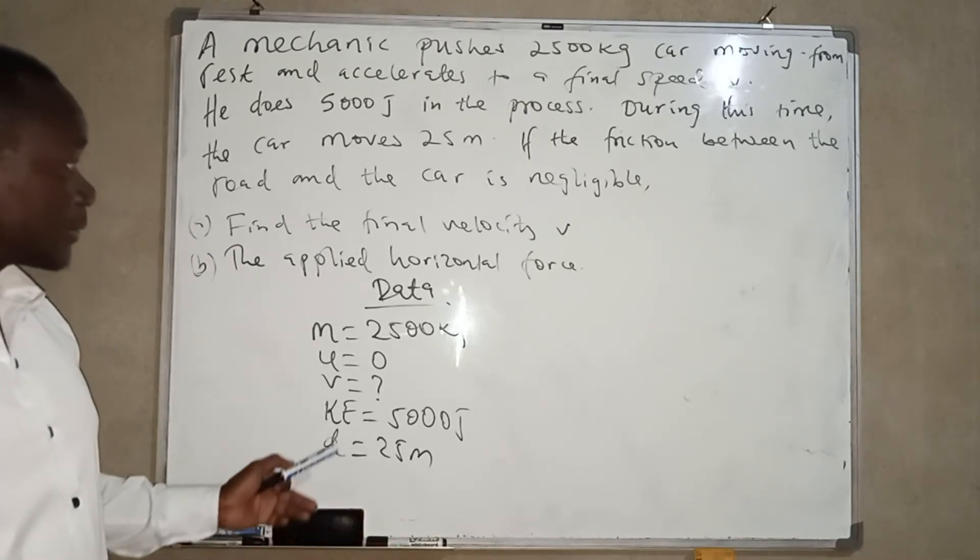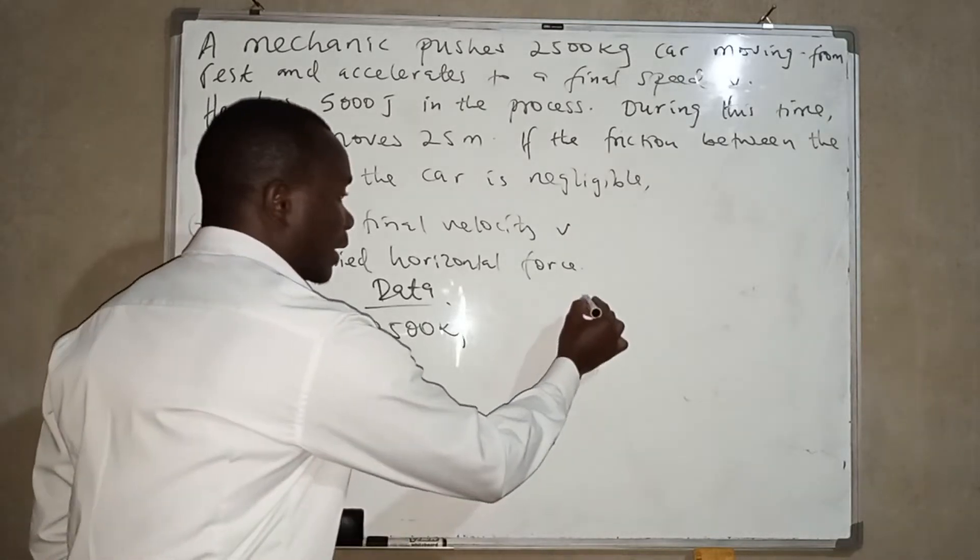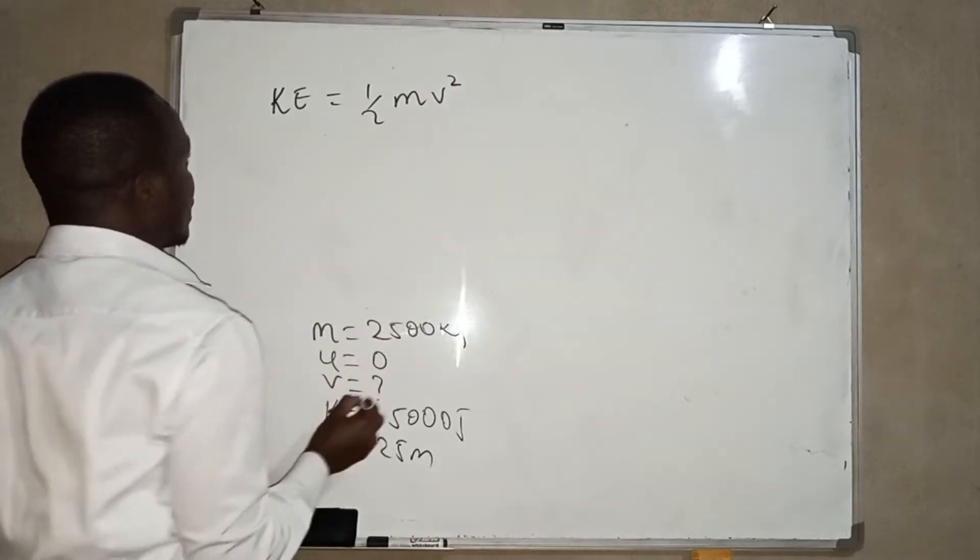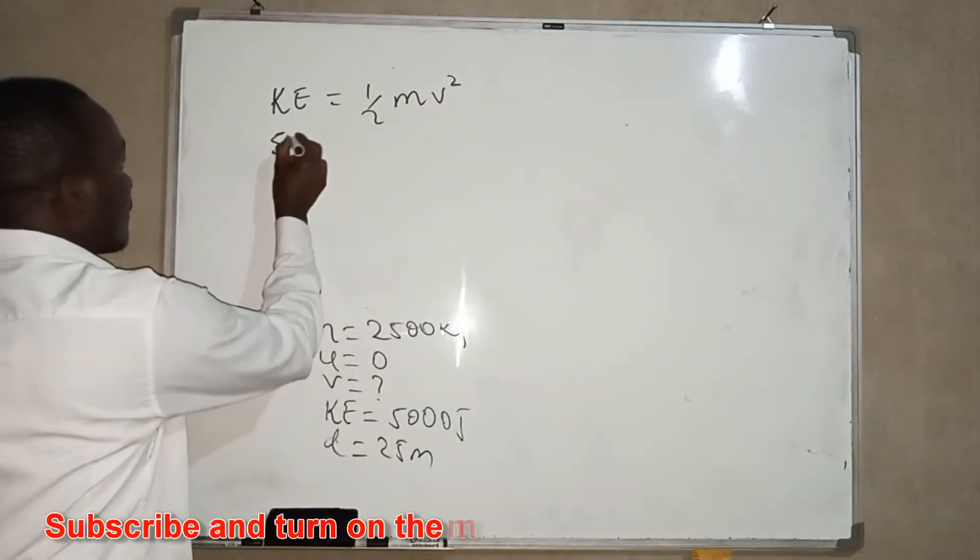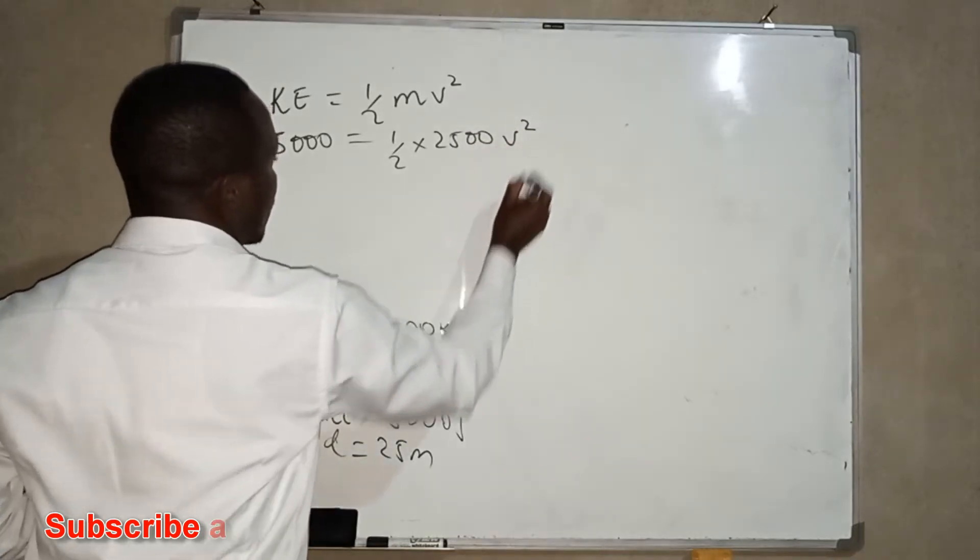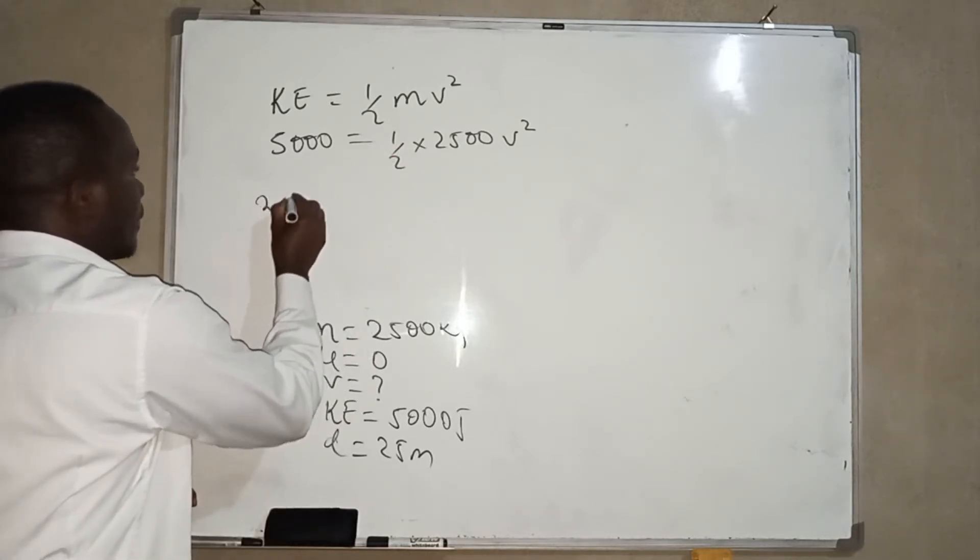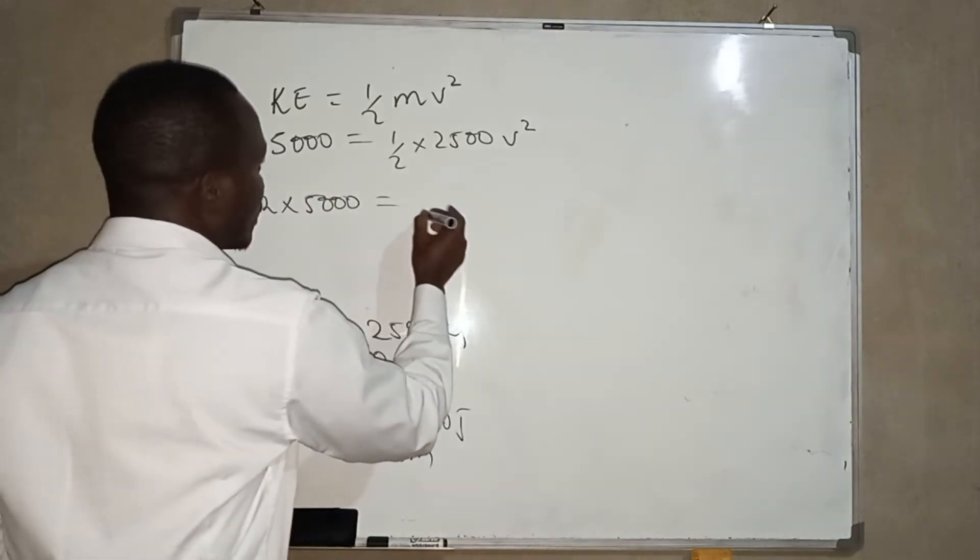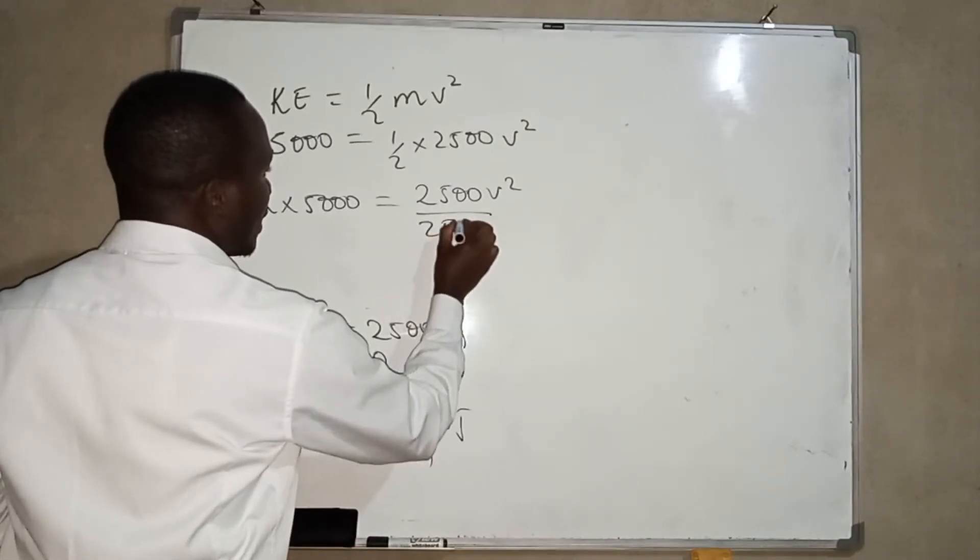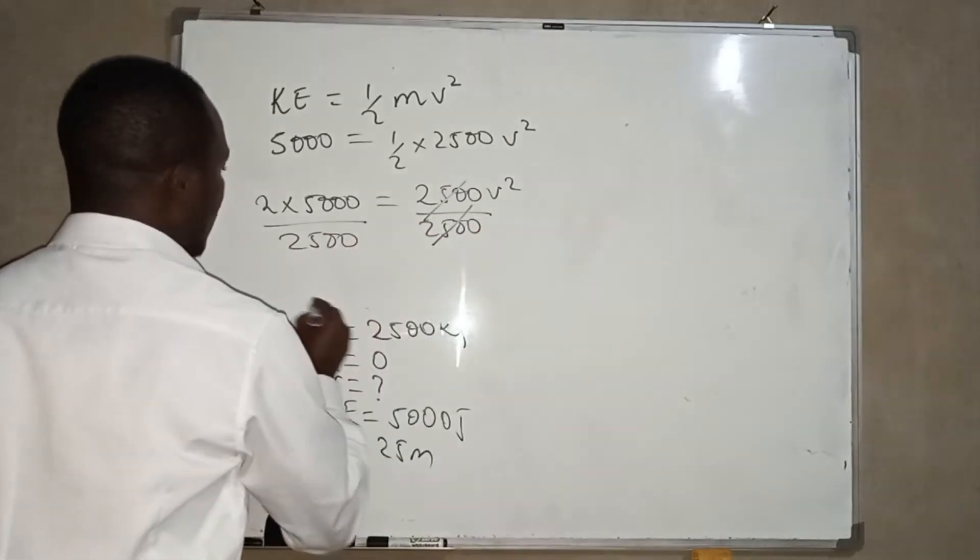This information is sufficient for us to find the velocity. So we know that kinetic energy is given by half MV squared, of which we know that kinetic energy is 5,000, which is half times 2,500 V squared. So if we multiply through by 2 to get rid of this, we are going to have 2 times 5,000, which gives us 10,000 equals 2,500 V squared.